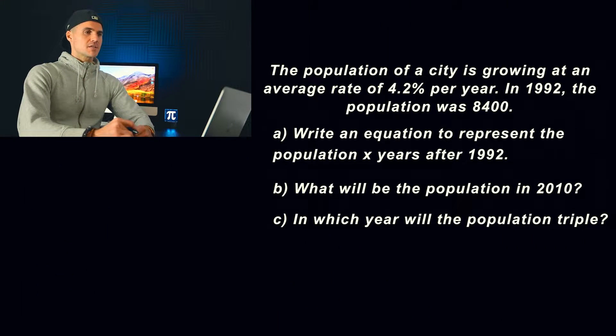What's up everyone? Welcome back. Patrick here. Moving on to the next example in the exponential functions unit test, another application question. So the population of a city is growing at an average rate of 4.2% per year. In 1992, the population was 8,400. Given that information, we have to answer parts A to C.